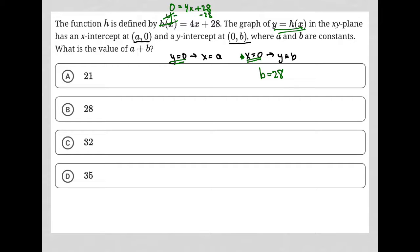Subtracting 28 from both sides of the equation, I would get negative 28 equals 4x. Dividing both sides by 4, I get x is equal to negative 7. And of course, x in this case really means a because that is our x-intercept.